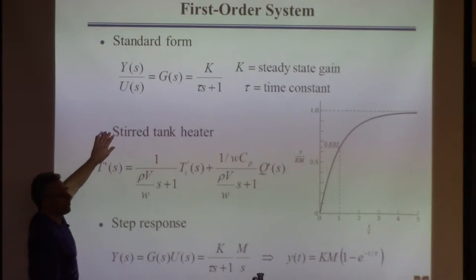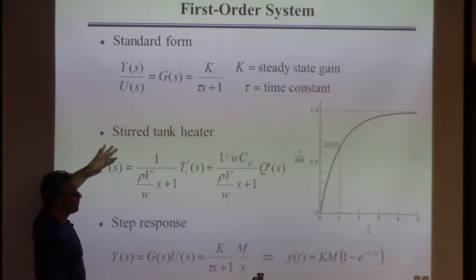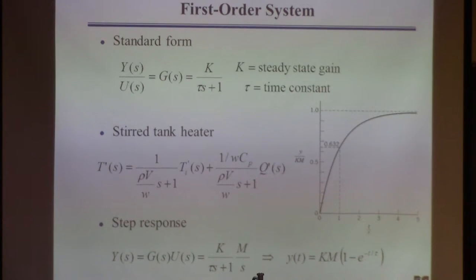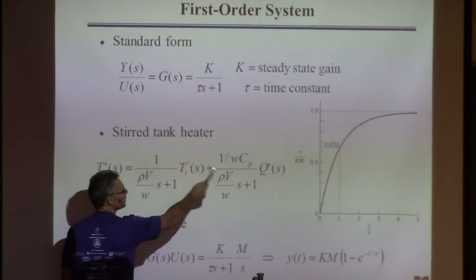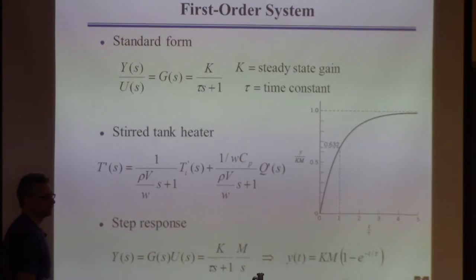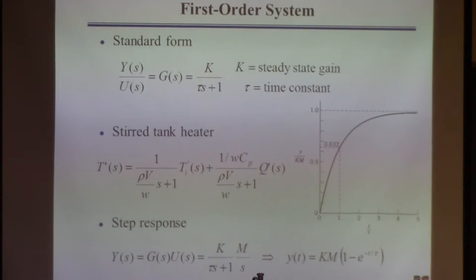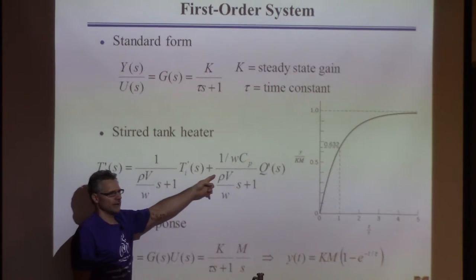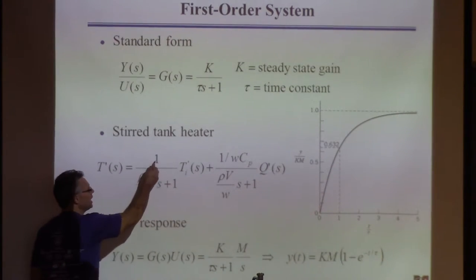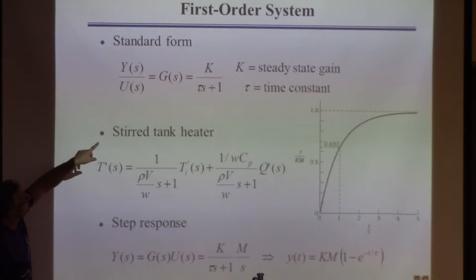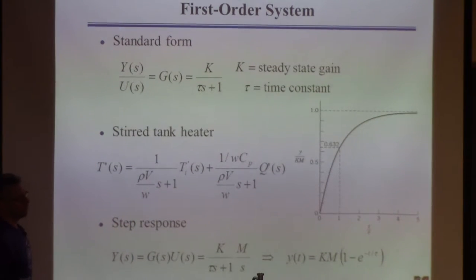This is just a reminder — this is what we derived from the stirred tank model. For each of the two inputs, inlet temperature and Q, there was a first-order transfer function K over (tau s + 1) that related that input to the output. Rather than derive the response separately for each, since they have the same form, I'll work generically with K over (tau s + 1) and find the response as a function of K and tau.